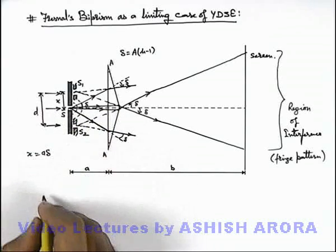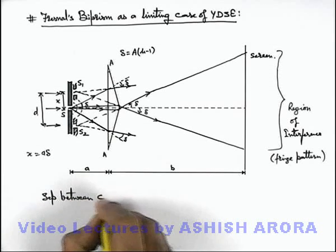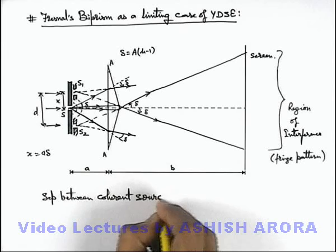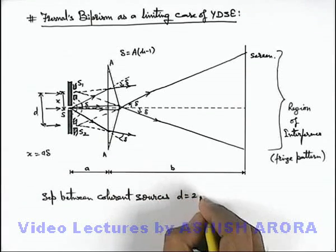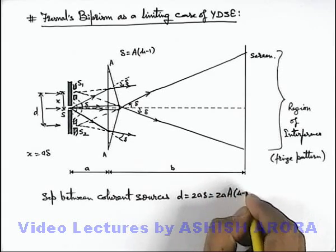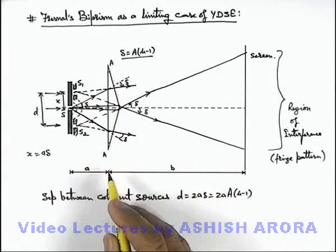So in this situation, the separation between coherent sources for interference, if we calculate, this d will be 2a·delta, which is given as 2a·α·(μ - 1), as for small angle prism we already know about the deviation angle.